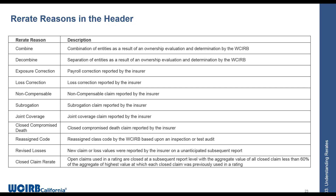For revised losses: when calculating the initial experience modification, all claims have been reported as closed at the second report level, so we're not expecting a third report level. We issue the modification believing we have all the experience needed. But after we issue the modification, we receive a third report level and either those closed claim values have changed, or there's a new late-reported claim. So we want to reissue the mod using those new values, and we would issue a re-rate with the heading 'revised losses.'